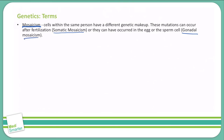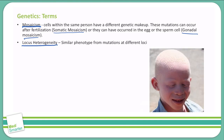Another term is locus heterogeneity. This is where you have a similar phenotype from mutations at different loci — these mutations occur at a different spot on a chromosome, but you see the same manifestations outwardly. An example of locus heterogeneity is albinism.